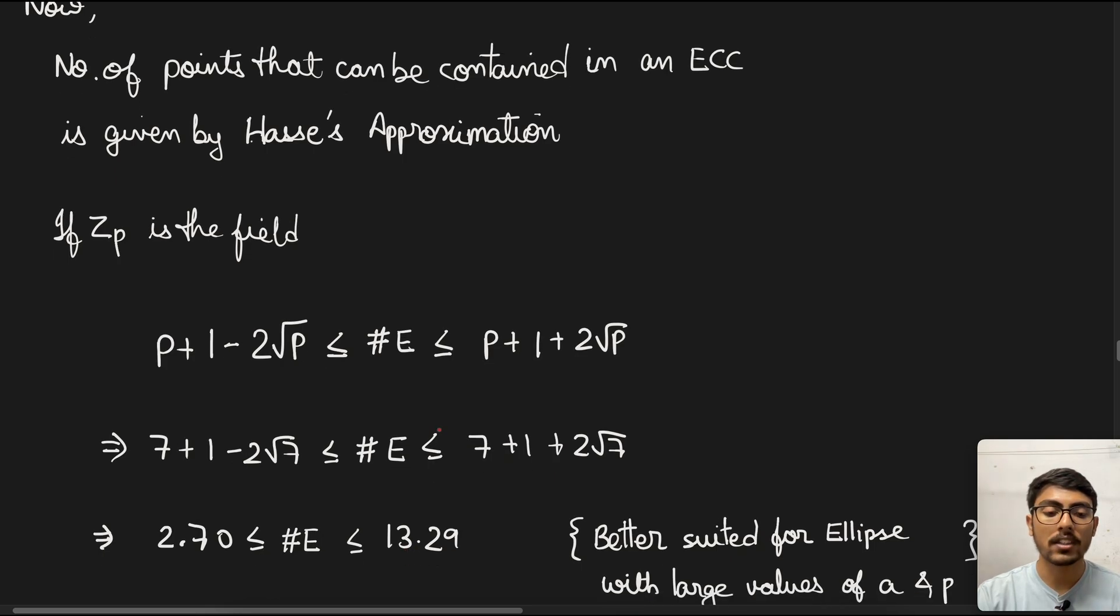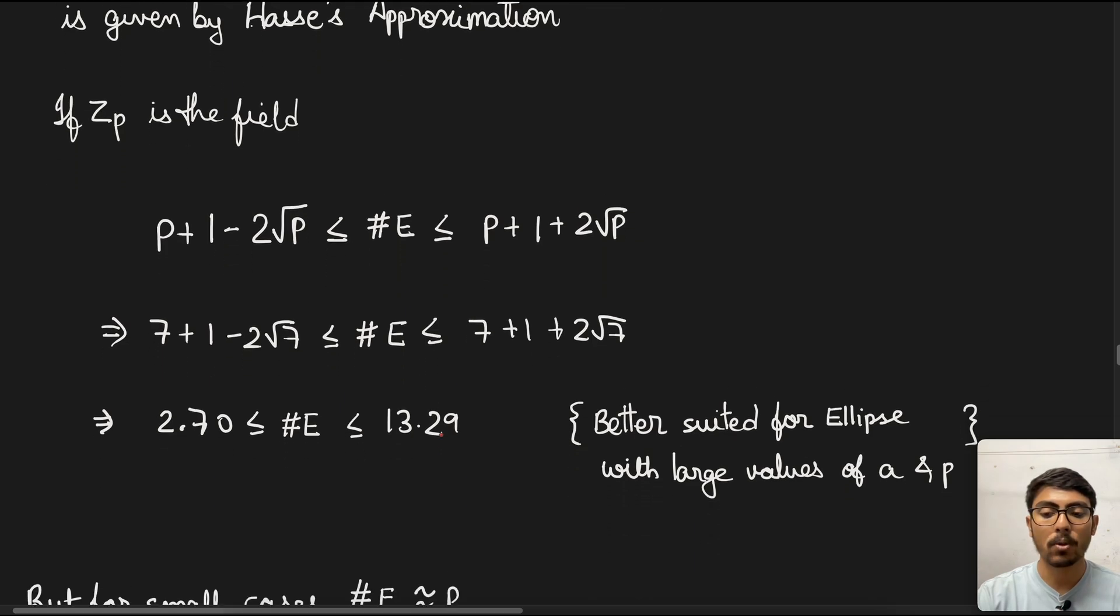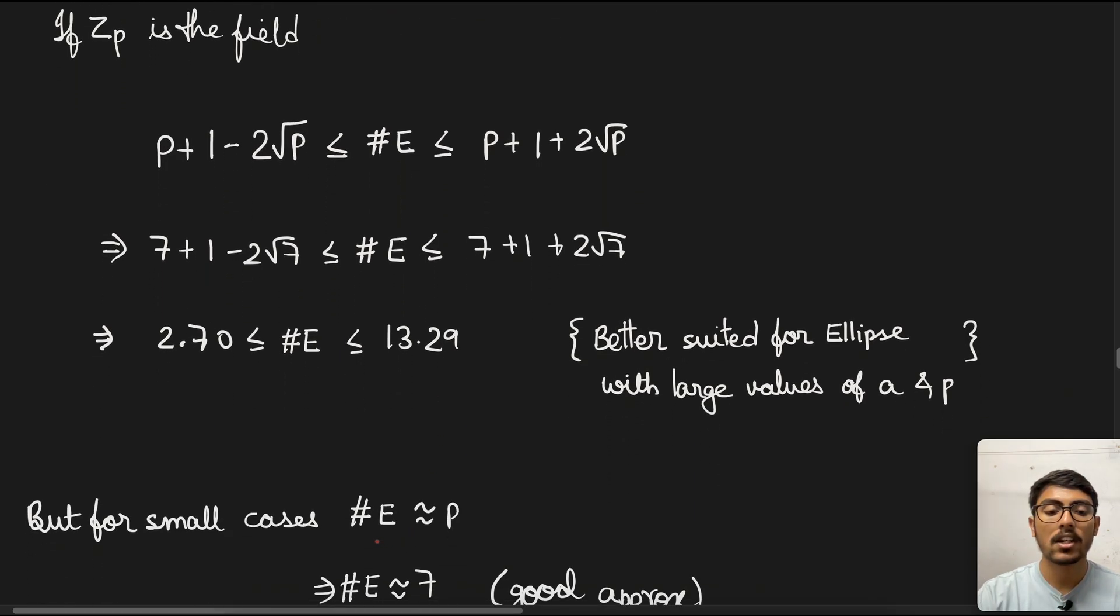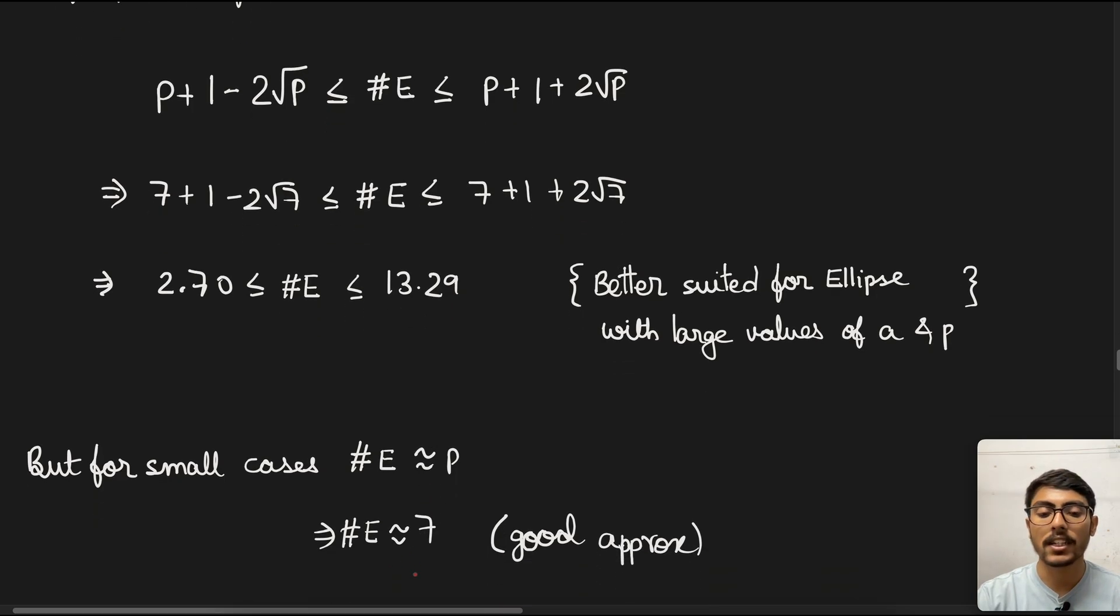This provides a vast choice of the number of points that can be present, but it is of more use when the values of a, p, and b are of higher magnitudes. For smaller cases, we can have this particular expression: number of points in elliptic curve is nearly equal to p. In our case, it will be nearly equal to 7.